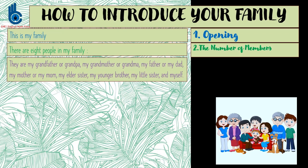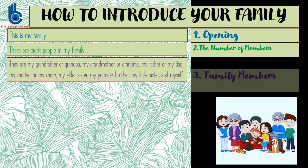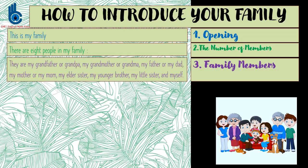He then continued by saying, 'They are my grandfather or grandpa, my grandmother or grandma, my father or my dad, my mother or my mom, my elder sister, my younger brother, my little sister, and myself.' This is an example of telling the family members.